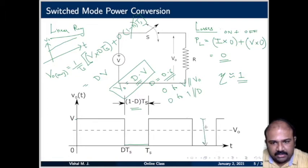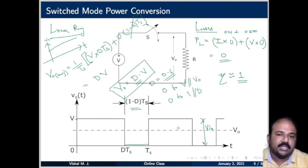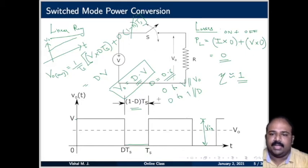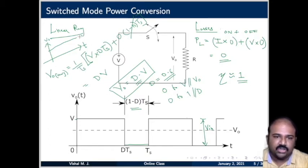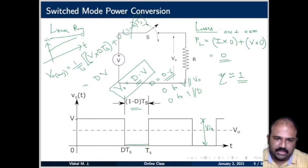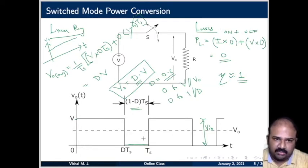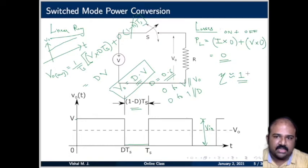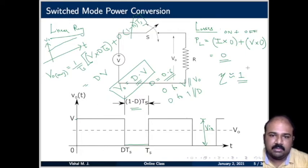One drawback of switched mode conversion is the heavy voltage ripple — the ripple voltage is as large as the input voltage itself, which is 100% ripple. We can use filters to reduce the ripple, but technically ripple will always remain. Linear regulators do not have this issue. For applications such as servo motors which require absolutely steady DC supply, you must use linear regulators. For most other applications that can afford a little ripple, switched mode power conversion is preferred. For servo applications, performance is the priority; for most others, efficiency is.